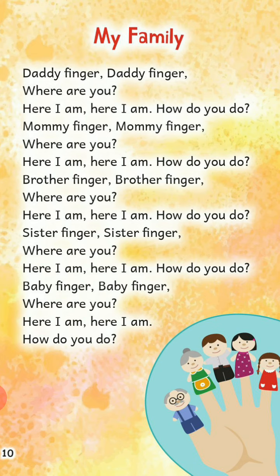Now, repeat it with me. Daddy finger, daddy finger, where are you? Here I am, here I am, how do you do? Mommy finger, mommy finger, where are you? Here I am, here I am, how do you do? Brother finger, brother finger, where are you? Here I am, here I am, how do you do? Sister finger, sister finger, where are you? Here I am, here I am, how do you do? Baby finger, baby finger, where are you? Here I am, here I am, how do you do?